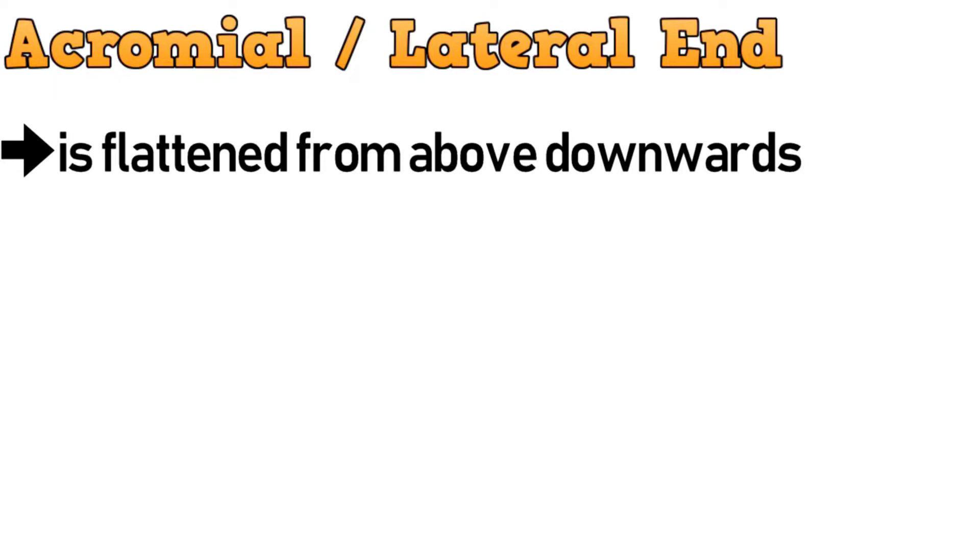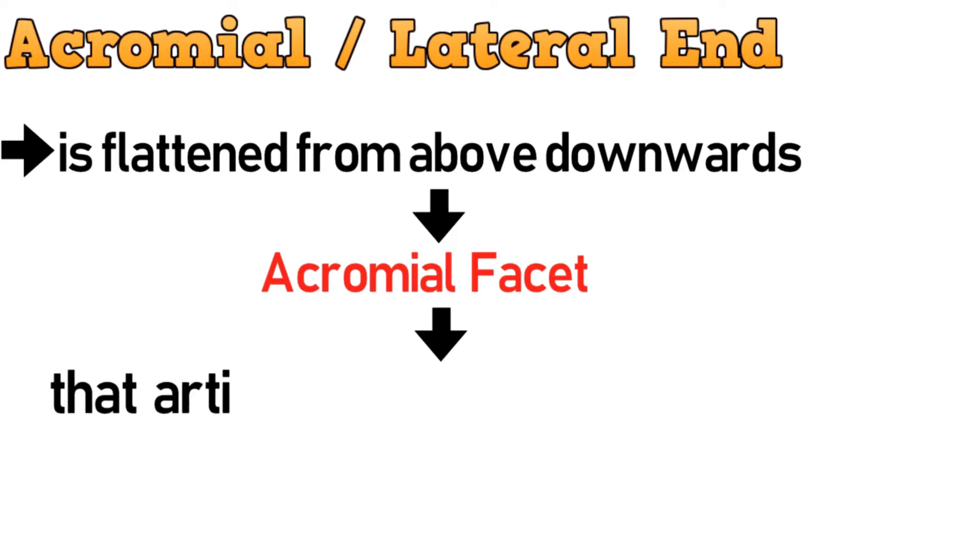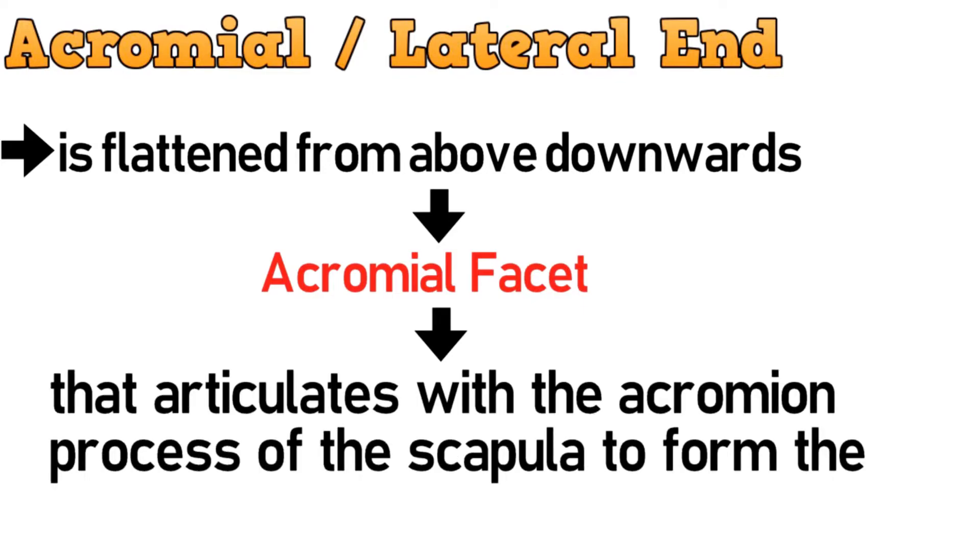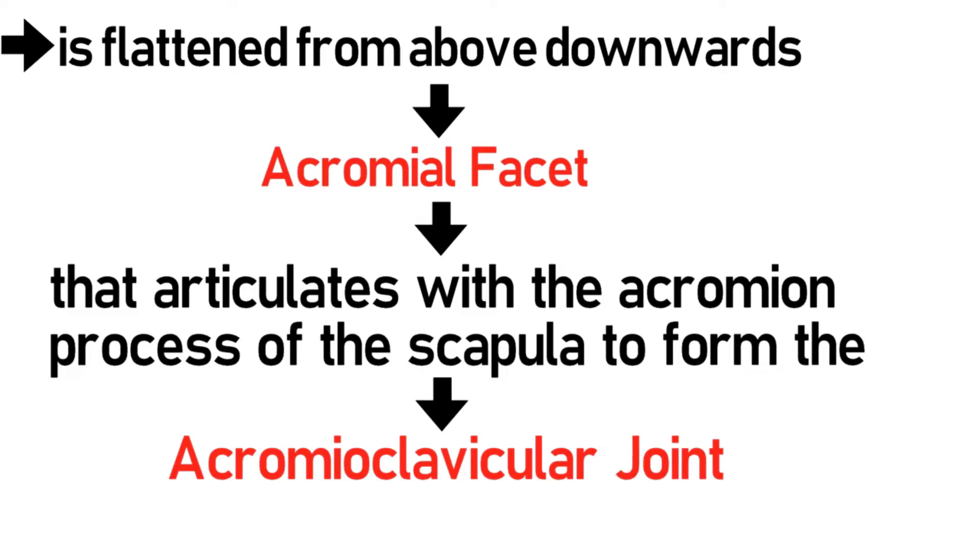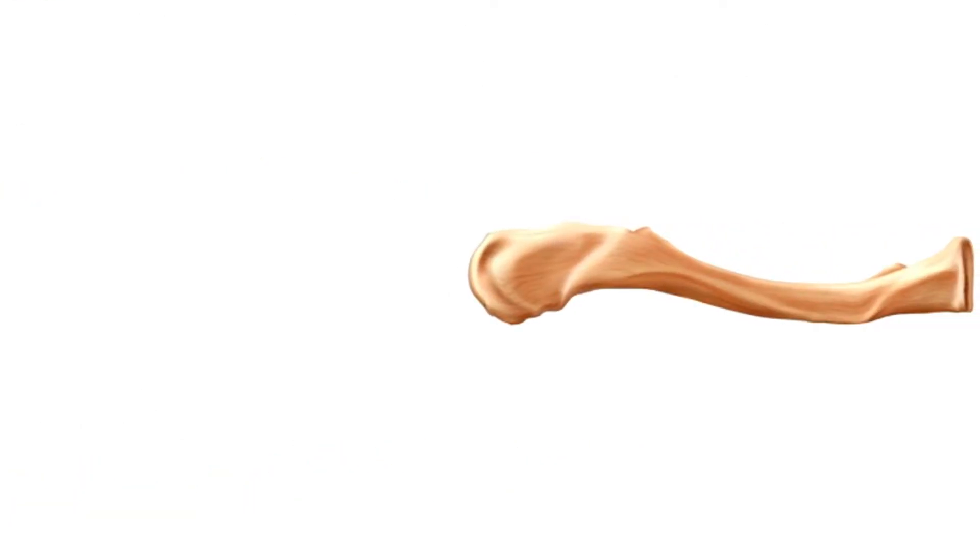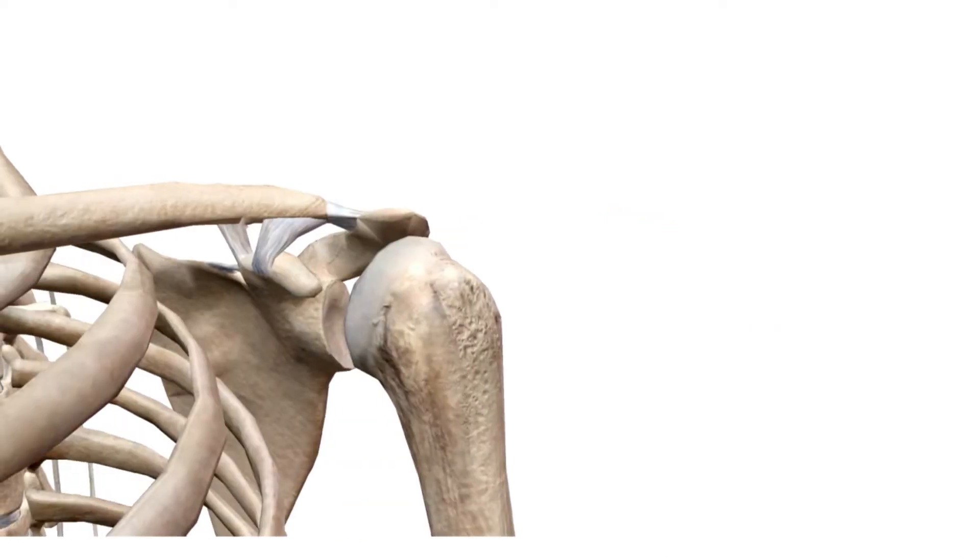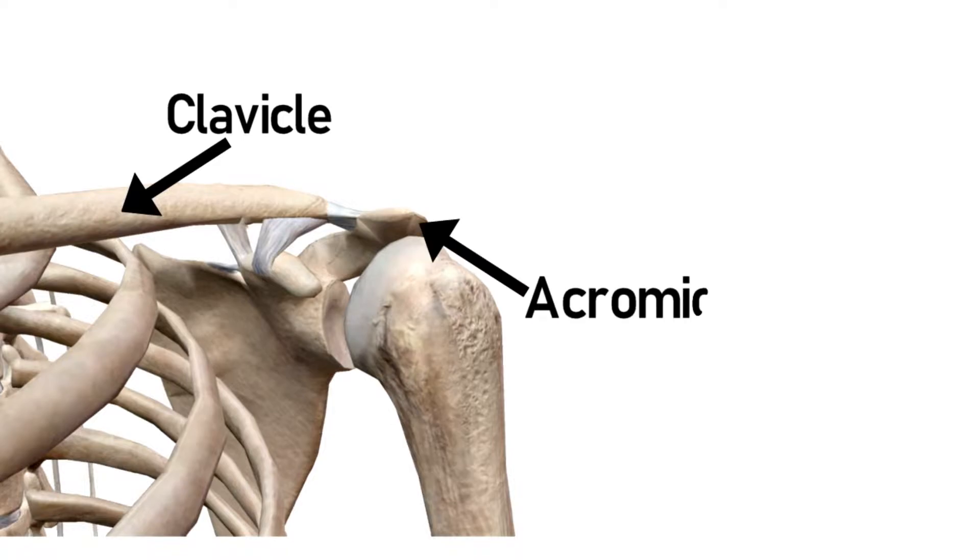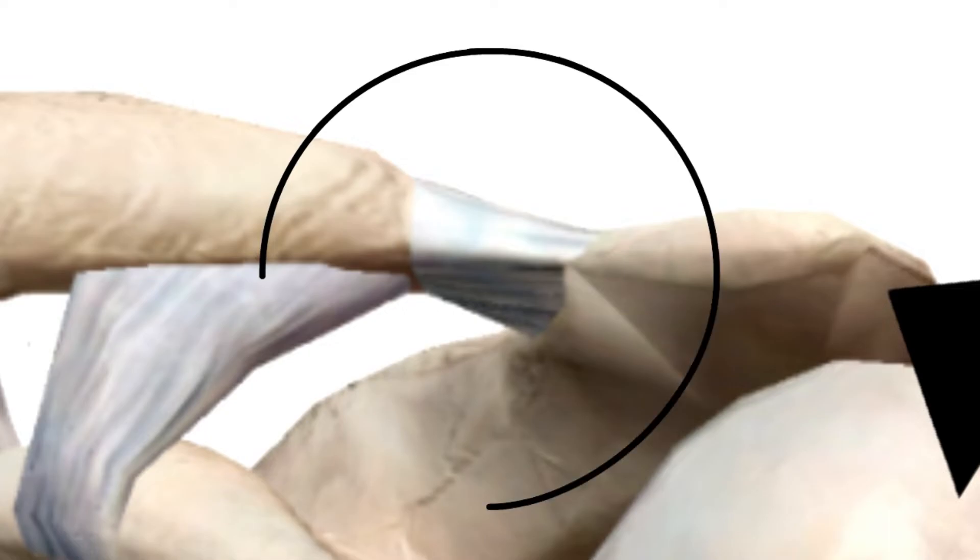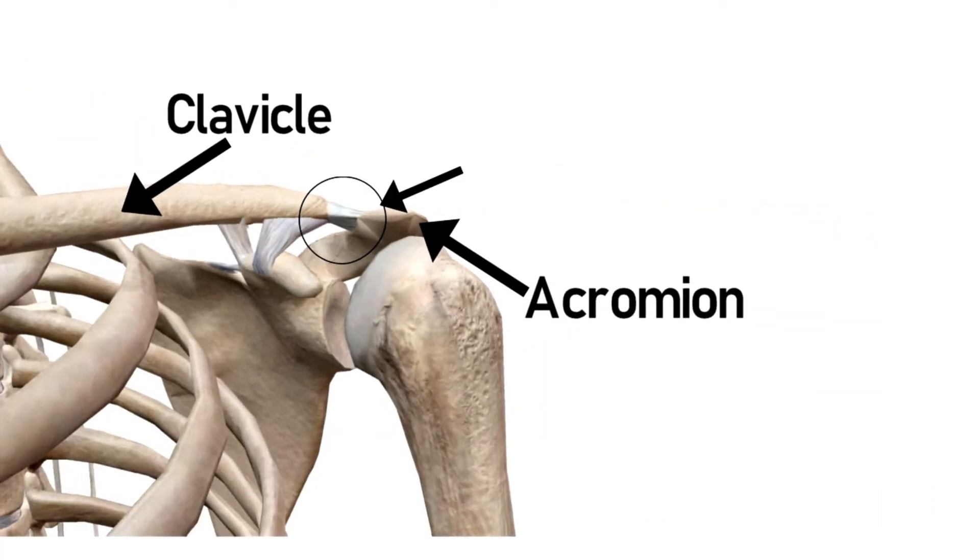Coming to the second part of clavicle, the acromial end. The acromial end is flattened from above downwards and has an acromial facet that articulates with the acromion process of the scapula to form the acromioclavicular joint. Let's have a look. This again is the superior view of the bone. This flat part which you can see is the acromial end, and this is the acromial facet. Now let's look how it articulates. So this is the clavicle, and this is the acromion of scapula. And here is the acromioclavicular ligament that helps to form the acromioclavicular joint.